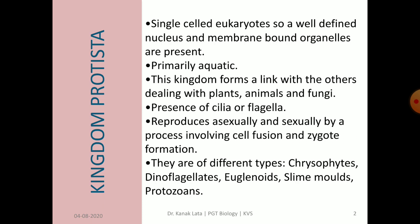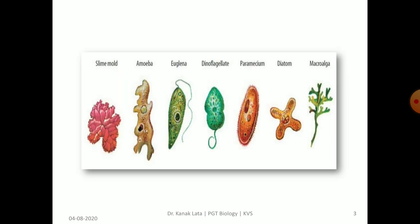There are different types of protists: chrysophytes, dinoflagellates, euglenoids, slime molds, and protozoa. You can observe different members including euglenoid, dinoflagellate, paramecium, diatom, and macroalgae.